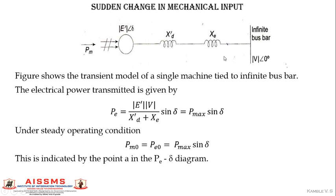The electrical power transferred is given by Pe = (|E'| × |V|) / (X'd + Xe) × sin(δ), and the term (E' × V) / (X'd + Xe) is referred to as Pmax, so Pe = Pmax × sin(δ). Under steady state or equilibrium condition, Pm0 equals Pe0, which equals Pmax × sin(δ) — that is, mechanical input power equals electrical output power.